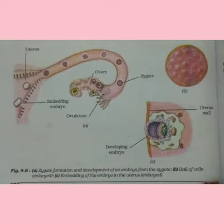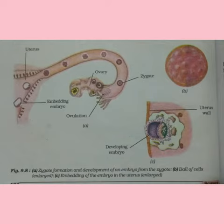Here, if this ovum is fertilized by a sperm, then it results in the formation of a zygote. Further, you can see that the zygote moves down the oviduct and divides repeatedly to form a ball of cells. This structure is called an embryo.